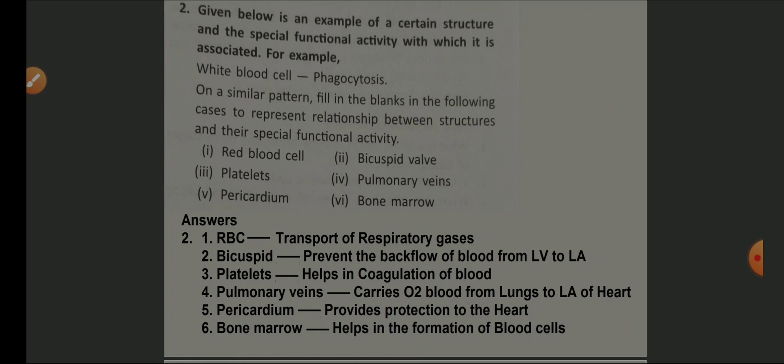Bicuspid valve — helps in preventing the backflow of blood from left ventricle to left atrium. Platelets — help in coagulation of blood. Pulmonary veins — carry oxygenated blood from lungs to the left auricle of the heart. Pericardium — provides protection to the heart. Bone marrow — helps in the formation of blood cells: WBCs, RBCs, and platelets.